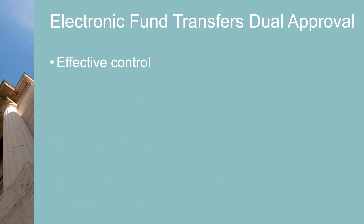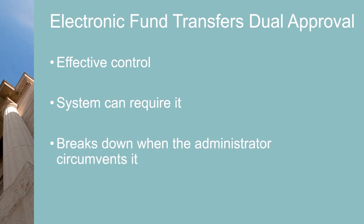Dual approval for ACH transactions and wires is an effective control. Each person should have a unique username and password. A good online business banking system can be set up to require two approvals before the funds are remitted. This control breaks down when only one person with administrator rights can change the dual requirement to a single authorization. In small companies, the owner may want to retain sole administrator rights to the online banking software. Larger companies will rely on tech controls like audits and reconciliations in addition to the segregation of duties.